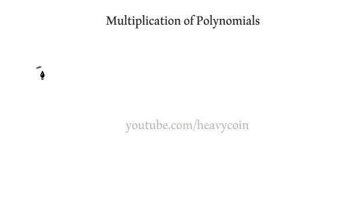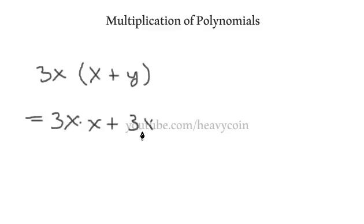So let's say that I had 3x times x plus y. Well, we do distributive law. So distributive property: 3x times x plus 3x times y. And we get 3x squared when we add our exponents, plus—and of course there's not much we can do with that.